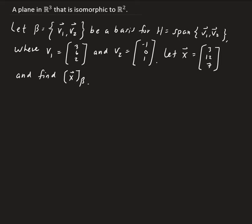So we have, we're going to let β be a basis for H, where H is the span of the collection of vectors V₁ and V₂. And V₁ and V₂ are given there.